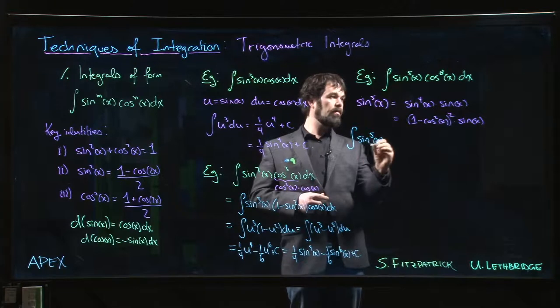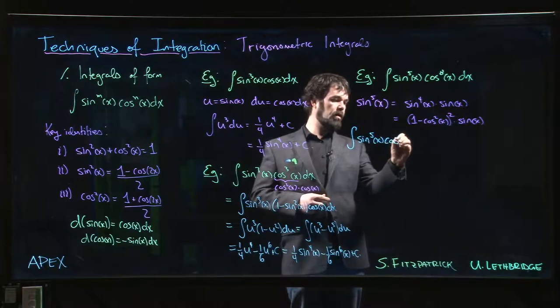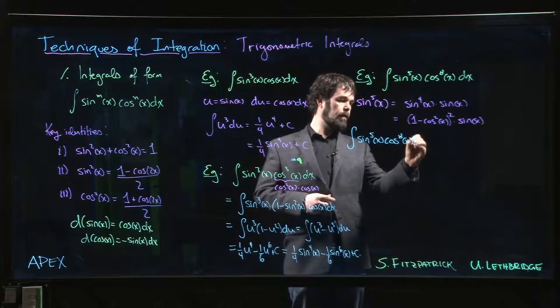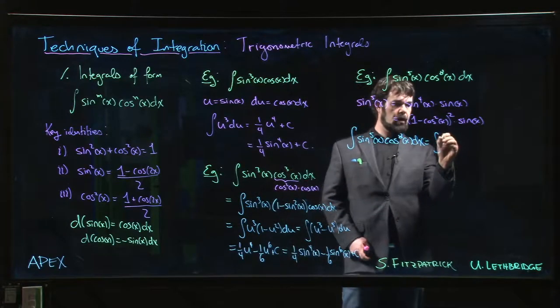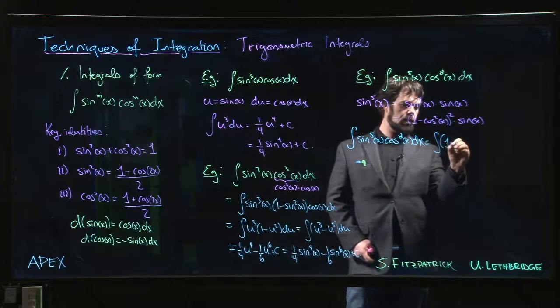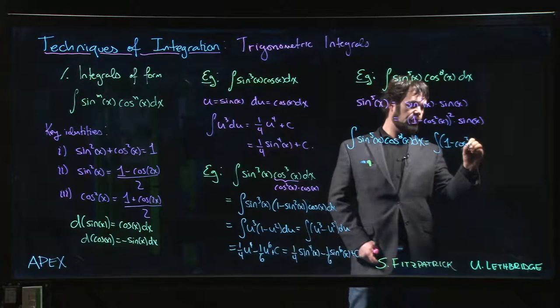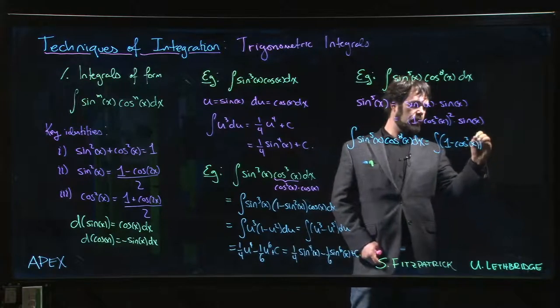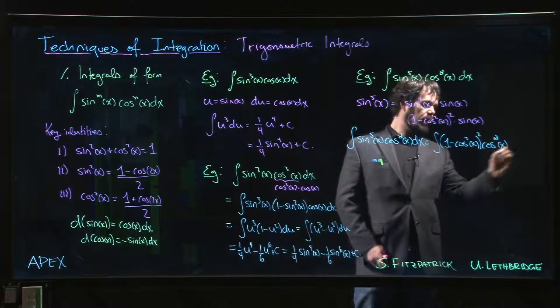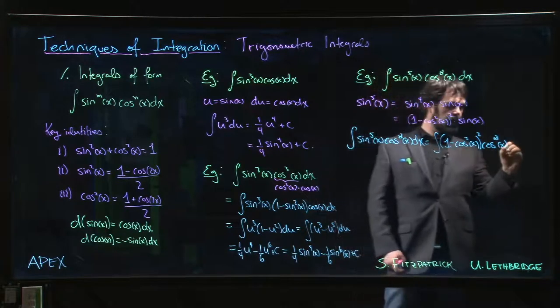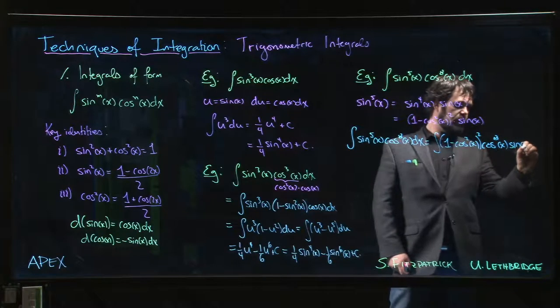That's equal to the integral of (1 - cos²x)² - I'm going to put the cos to the eighth x in here - and then we have sine x dx.